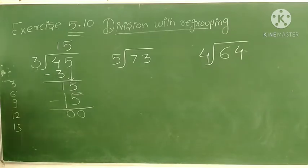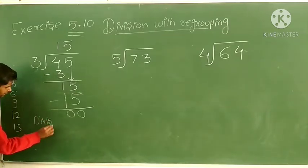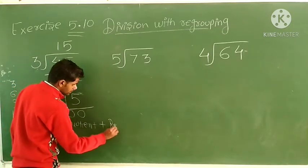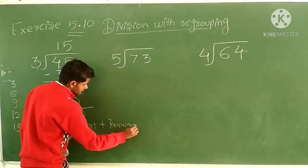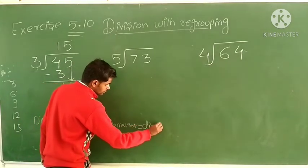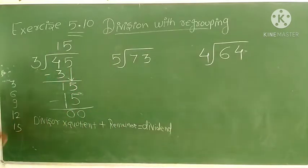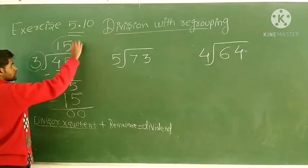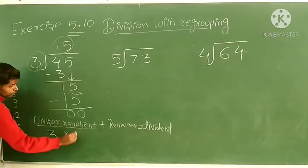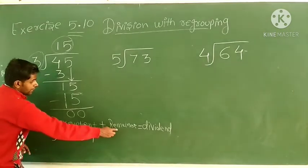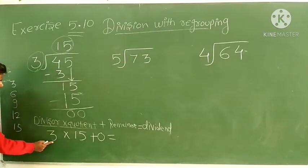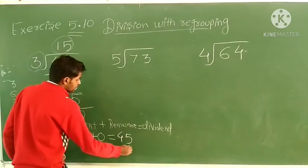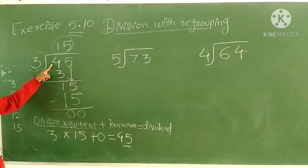Now we check whether the answer is correct. The formula is: divisor × quotient + remainder = dividend. So: divisor is 3, quotient is 15. 3 into 15 — 15 ones are 15, 15 twos are 30, 15 threes are 45 — plus remainder 0 equals 45. And 45 is our dividend, so the answer is correct.